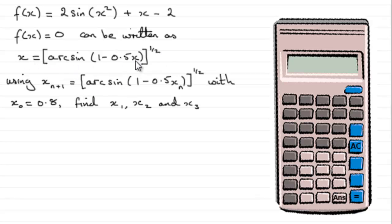We can turn this into an iterative formula: x_{n+1} equals arcsin(1 - 0.5x_n) to the power 1/2. If we start with our first approximation to the root, x_0 equaling 0.8, we've got to find x_1, x_2, and x_3 to five decimal places.